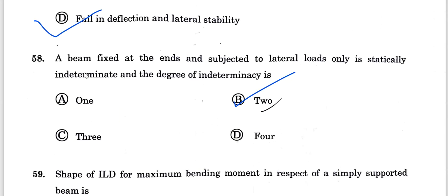Question 58: A beam is fixed at both ends and subjected to lateral loads only. The degree of indeterminacy for a beam with lateral loads only and fixed ends is 3. Option C is the correct answer.